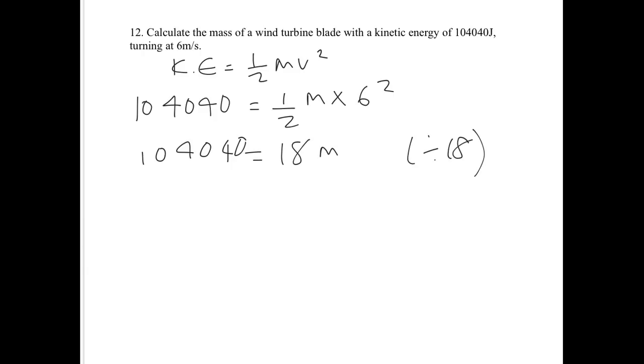I think it's the last question. Amazing. So calculate the mass of a wind turbine with kinetic energy of, I'm so bad at saying numbers, so I'm not going to say that number, turning at 6 meters per second. Right, again, that is really similar to the question before. So I'm just going to write the formula. I'm going to write out this long number, which I'm not going to say. And half of mass times 6 squared. Let's do it exactly the same as before. So 6 squared is 36. Divided by 2 is 18. So 18m. You need to divide both sides by 18 to get m by itself. I think I keep going up when I talk. It's really strange. I'll stop doing that. Divided by 18. Yay, and that's a nice number, so I'm kind of convinced I'm right, which is 5,780 kilograms.